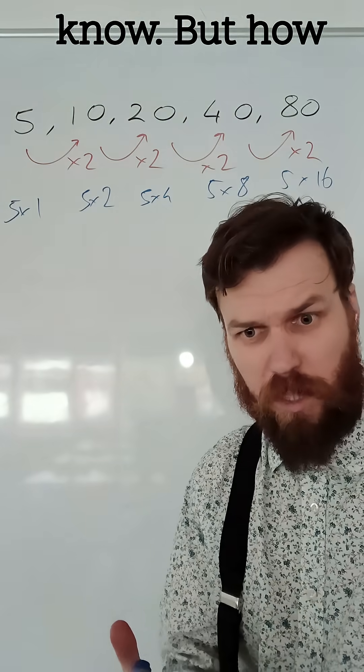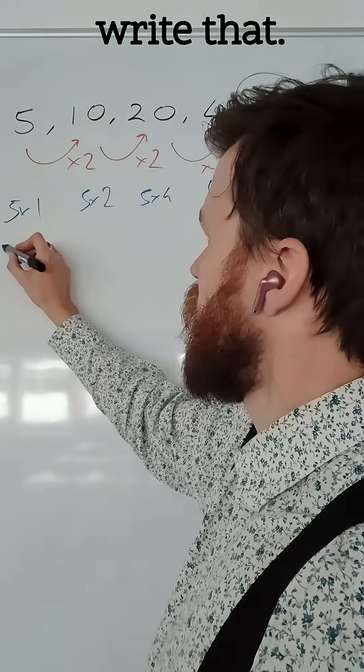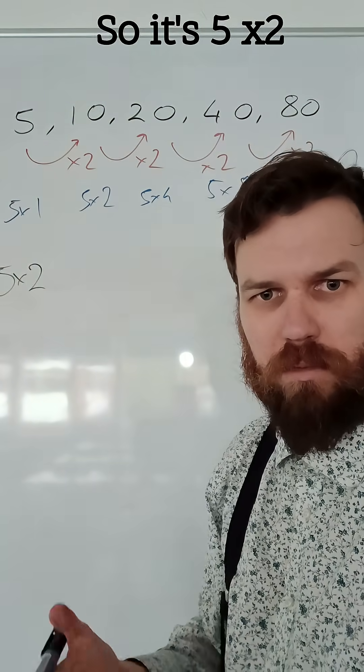OK, well, that's useful and good to know. But how else could we write this 5 times 1? Well, I could write that as, it's going up by 2 each time. So it's 5 times 2 to the what? Well, to get 1 would be 0.